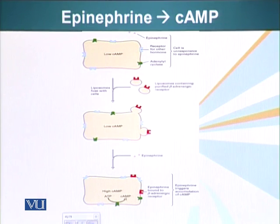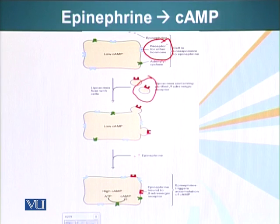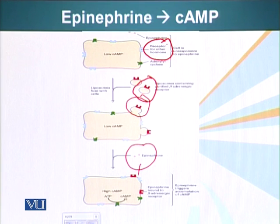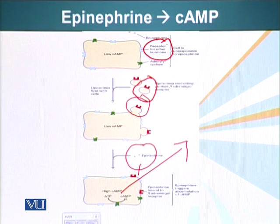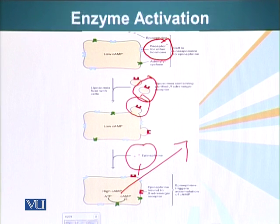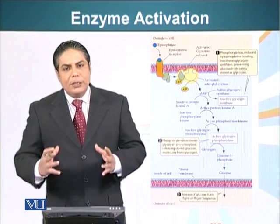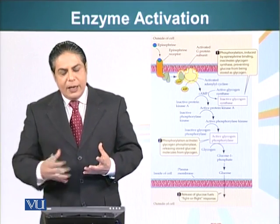How do we know this actually happens? A simple experiment was designed: take a cell that does not respond to epinephrine - which has adenyl cyclase but receptors only for other hormones - and make small vesicles containing the epinephrine receptor, then fuse them with this cell. Once epinephrine is added, we can measure the amount of cyclic AMP produced. The cell now produces cyclic AMP, confirming that the epinephrine-receptor interaction results in activation of adenyl cyclase, which produces cyclic AMP. We will see how cyclic AMP mediates its effects in the cell in the next module.